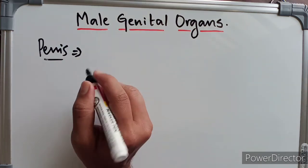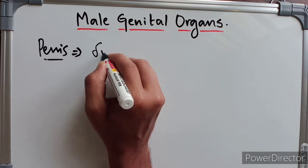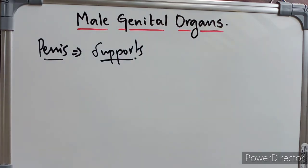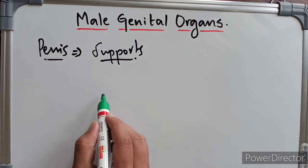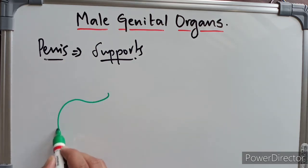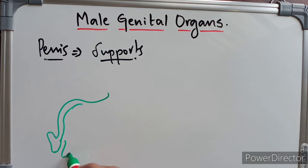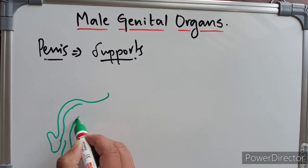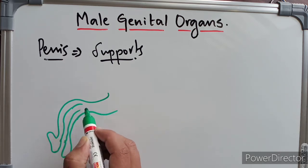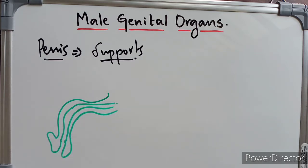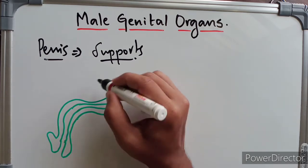Now we will discuss the supports of the penis. There are principally two ligament supports of the penis: one is called the fundiform ligament of the penis and the other is called the suspensory ligament of the penis. I am drawing the penis to illustrate these structures.